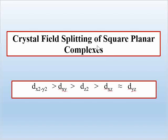Now I will remind you of the splitting of the square planar complex. In the square planar complex, dx²-y² has the highest energy and dxz and dyz have the lowest energy — the same as in square pyramidal. However, the order of energy of dxy and dz² is different from that of square pyramidal geometry.